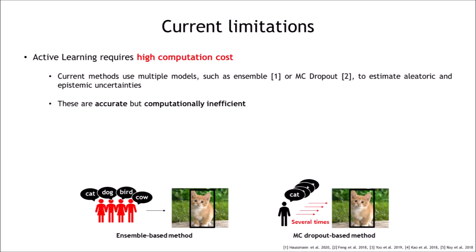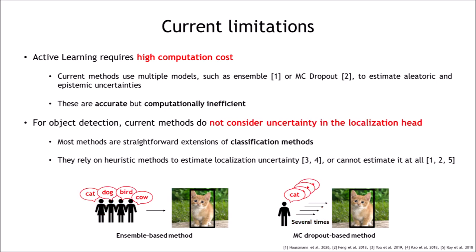There are two current limitations that we have solved. First, active learning requires high computational cost. Current methods use multiple models such as ensemble or MC Dropout to estimate aleatoric and epistemic uncertainties. These methods are accurate but computationally inefficient. Second, for object detection, current methods do not consider uncertainty in the localization head. Most methods are a straightforward extension of classification methods. Although it is active learning for object detection, they rely on heuristic methods to estimate localization uncertainty or cannot estimate it at all.